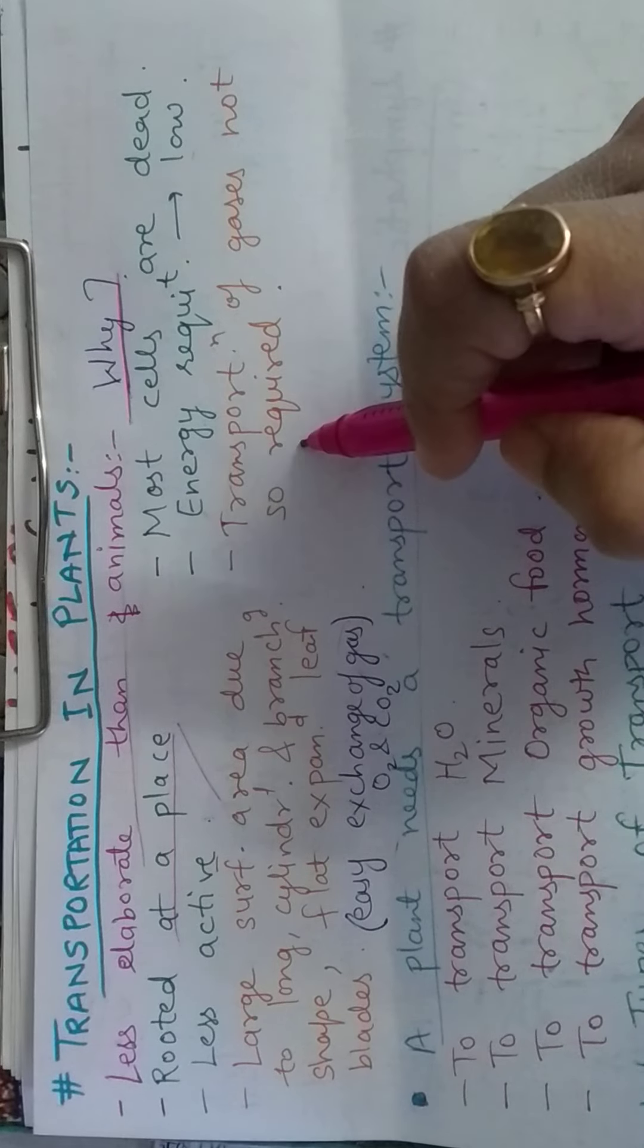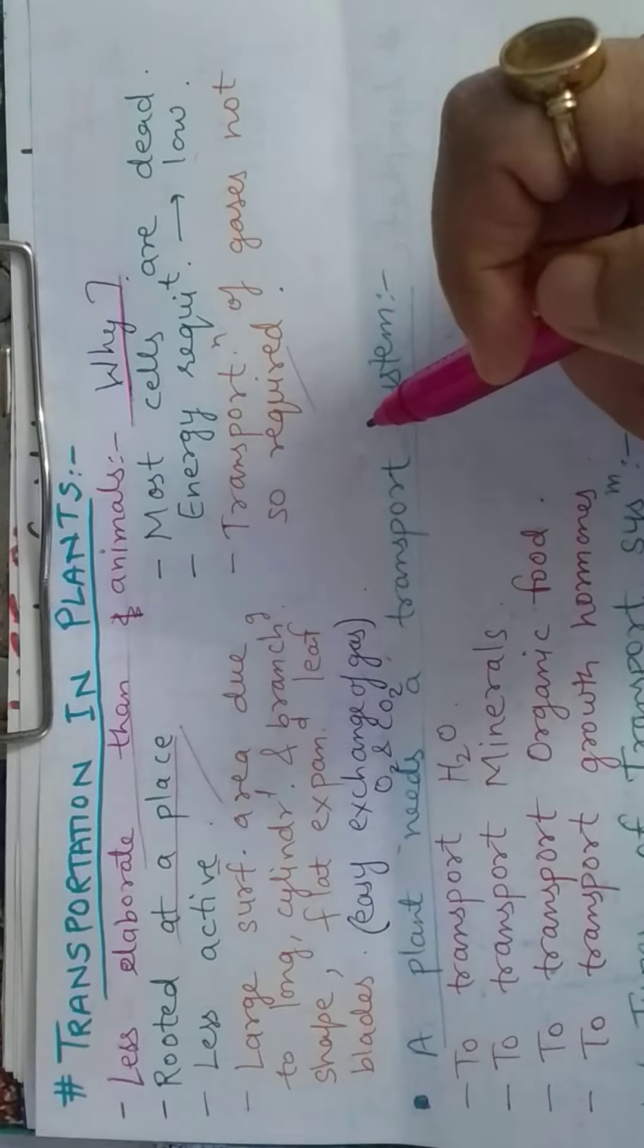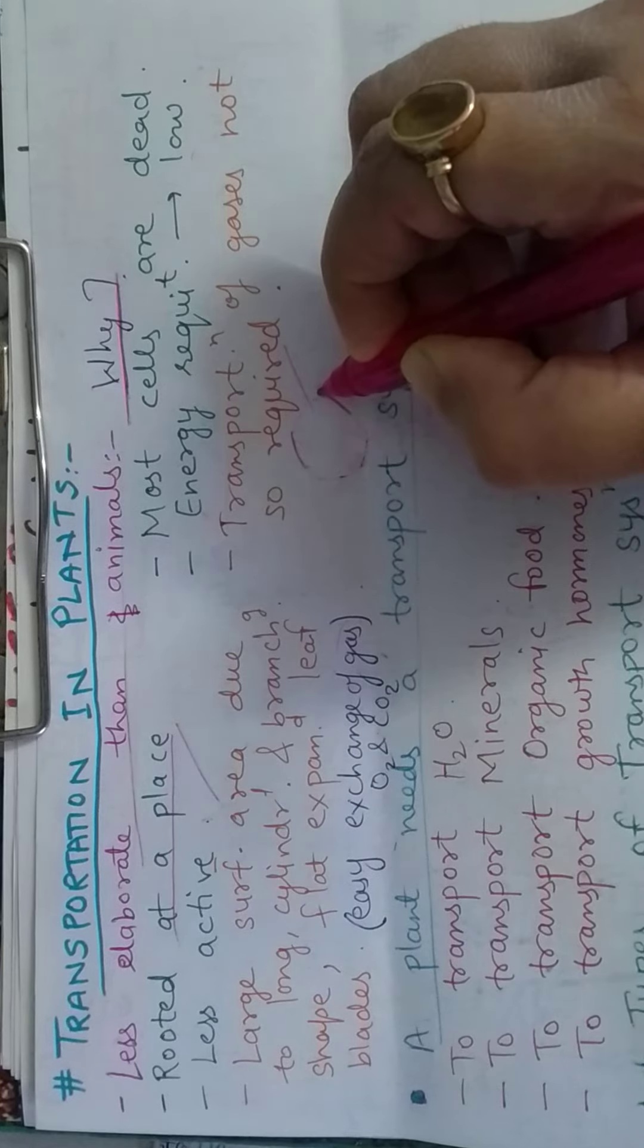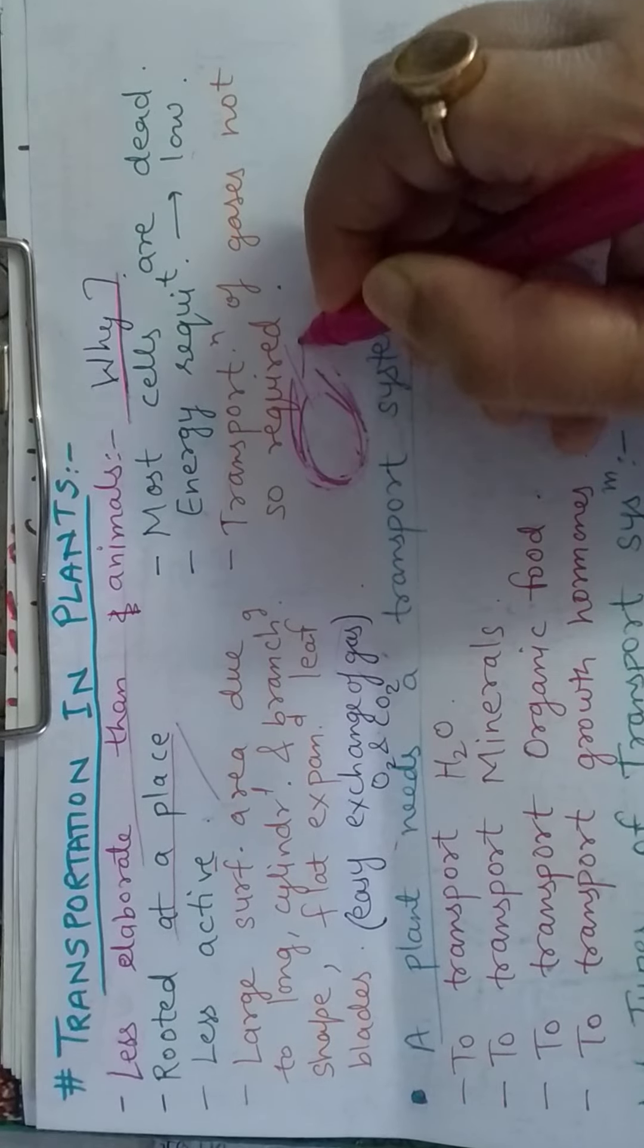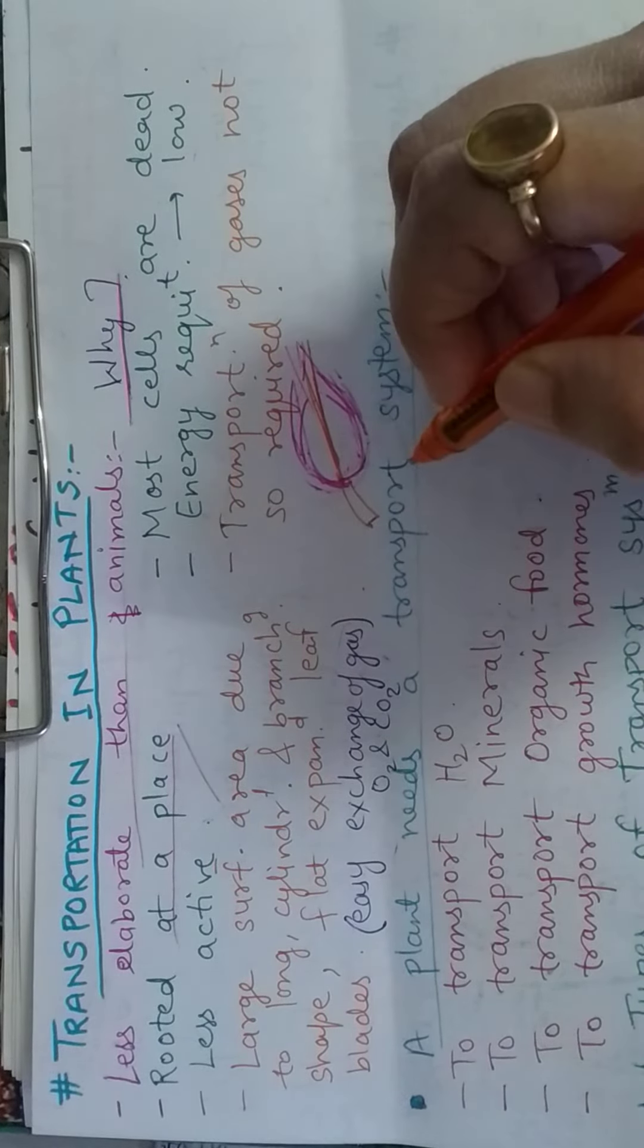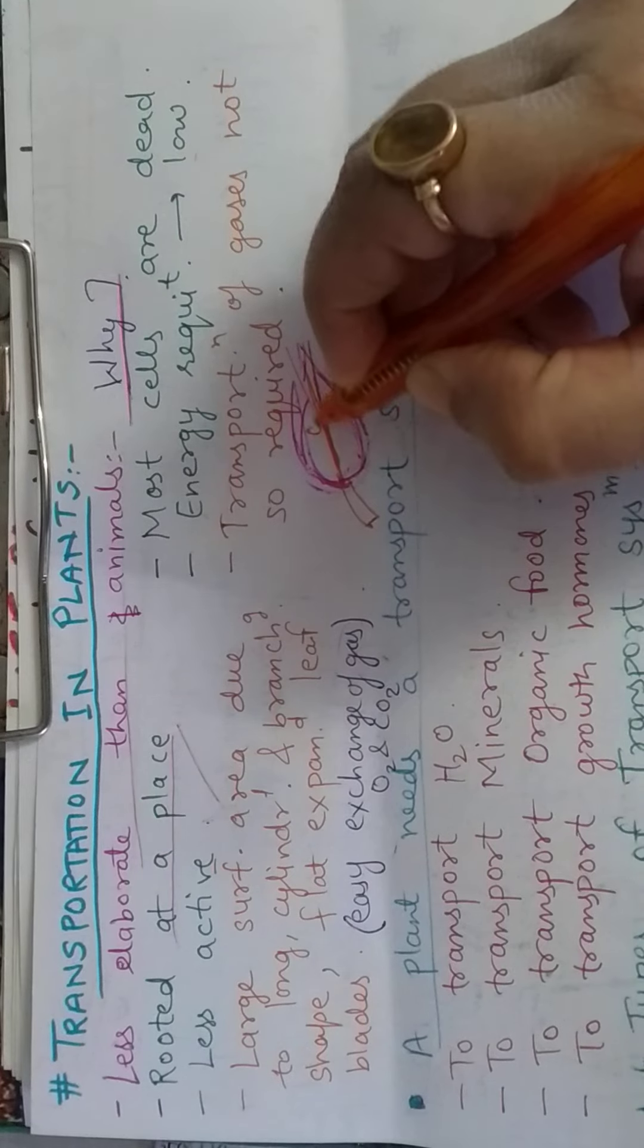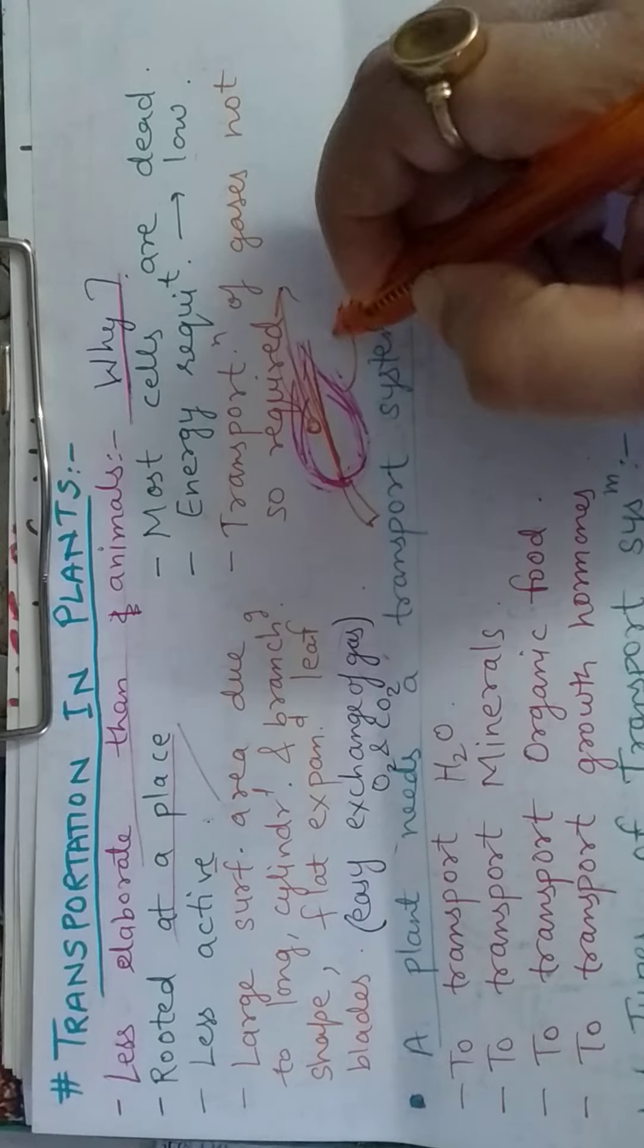Transportation of gases also doesn't have to move so much in plants. There is also a large surface area due to long cylindrical branching shape. Due to this large surface area, long line transportation problem is not happening because the exchange of oxygen and carbon dioxide which we have studied in the previous lecture.